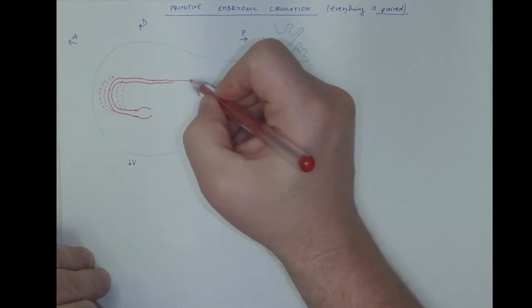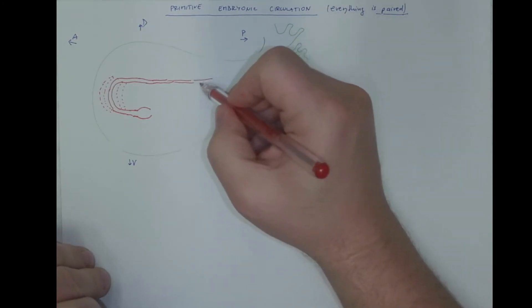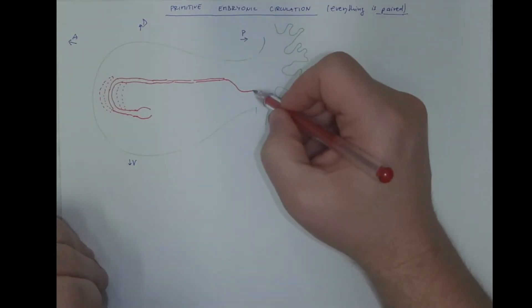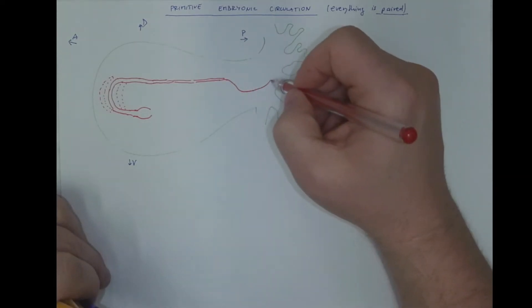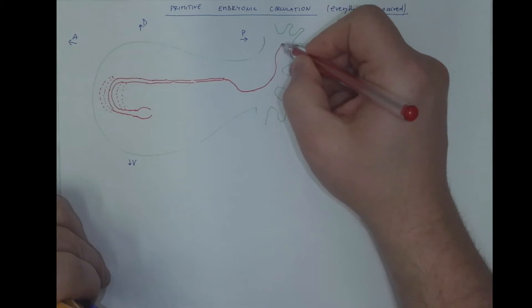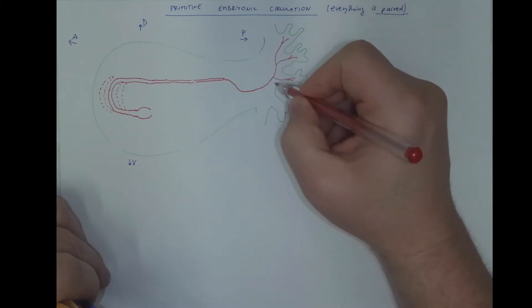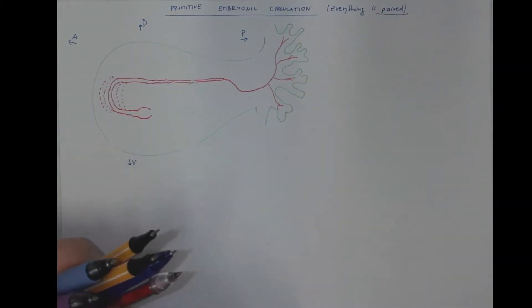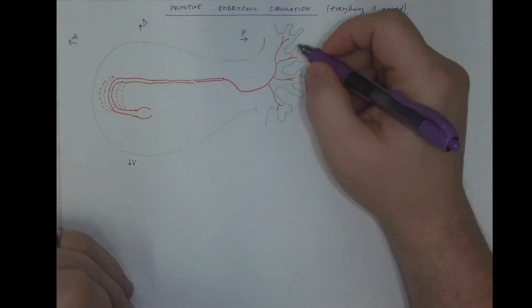From the dorsal aorta, there comes the umbilical artery that goes through the connecting stalk into the chorionic plate of the placenta, where it branches into the villi to receive oxygen, to receive nutrients and to get rid of the waste products.